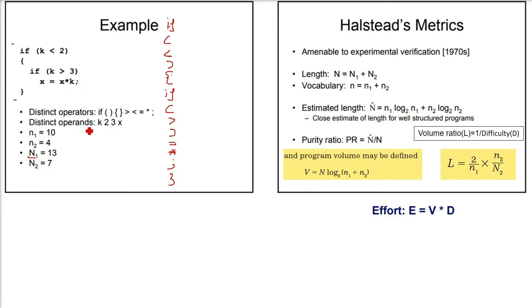Let's go to operands. Operands are those given by us. So k, then 2, then k repeated, then 3. These are constants and variables basically. x, then x again, and k. These are the operands. They will be 7. Capital N2 is 7.